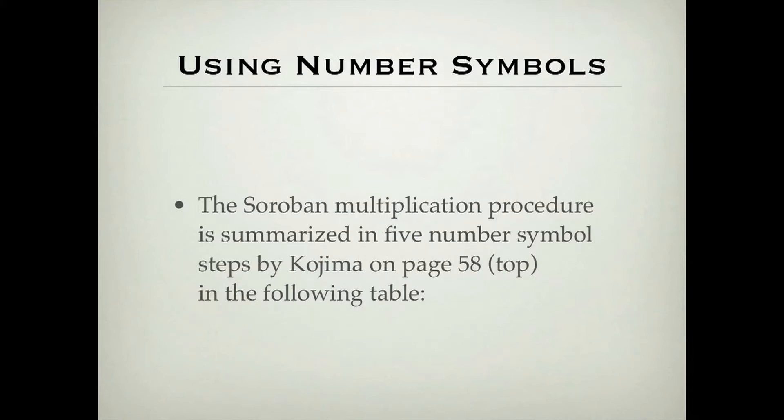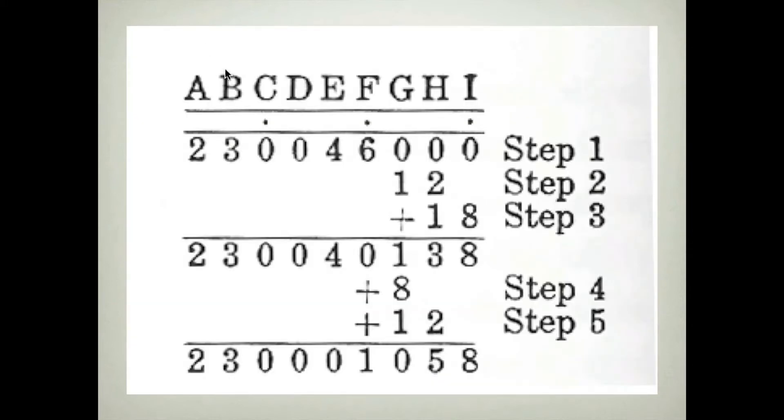We're going to consider this table from page 58 of Kojima. This top legend names with letters the appropriate rods of the Soroban. In Step 1, we've entered the multiplier 23 and the multiplicand 46 in such a way that there are two vacant rods in between.